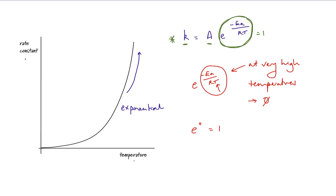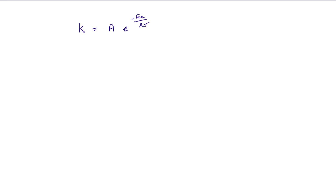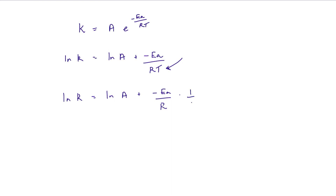By linearising it we're turning it into an equation in the form of a straight line graph: y equals mx plus c. Starting with our Arrhenius equation K equals A times e to the power of minus Ea over RT, we take the natural logarithm of both sides. That gives ln K equals ln A plus minus Ea over RT. We then separate out the temperature function: ln K equals ln A plus minus Ea over R times 1 over T.